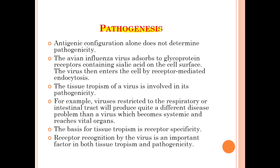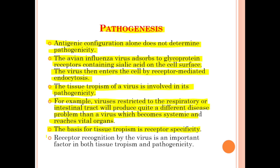Now we will discuss the pathogenesis of avian influenza. The antigenic configuration alone does not determine the pathogenicity. The avian influenza virus absorbs to glycoprotein receptors containing sialic acid on the cell surface, then enters the cell by receptor-mediated endocytosis. The tissue tropism of a virus is involved in its pathogenicity — viruses restricted to the respiratory or intestinal tract produce a different disease problem than a virus which becomes systemic and reaches vital organs. The basis for tissue tropism is receptor specificity.